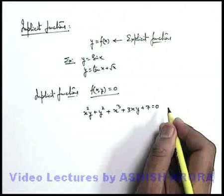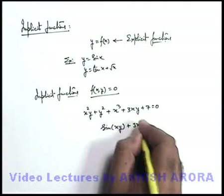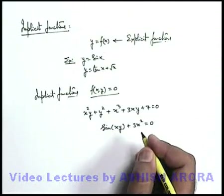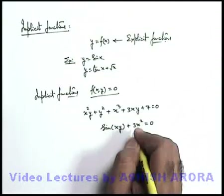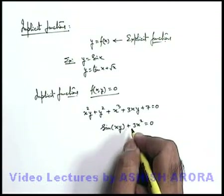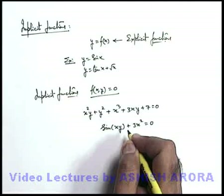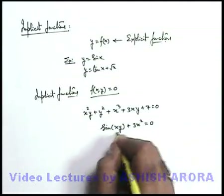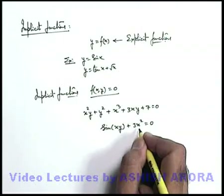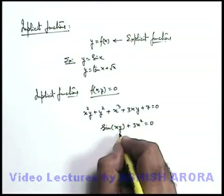You may get one or more values of y. Like for an example, you are given x²y + y² + x³ + 3xy + 7 = 0. This is an implicit function in variables x and y. Similarly, if we have the function sin(xy) + 3x² = 0, this is also an implicit function of x and y. However, it may have real or imaginary roots — the values of x and y may exist or may not exist.